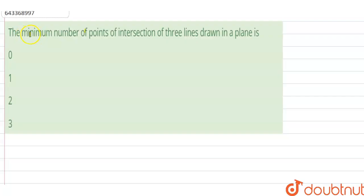Hi guys, we have a question here. The minimum number of points of intersection are three lines drawn in a plane. Options are 0, 1, 2, 3. So let's come to solve this question.